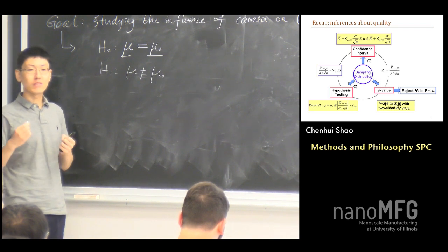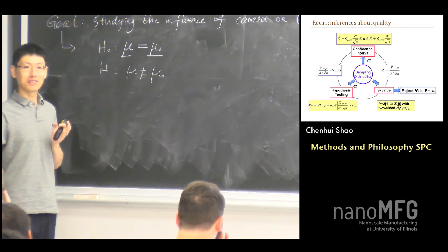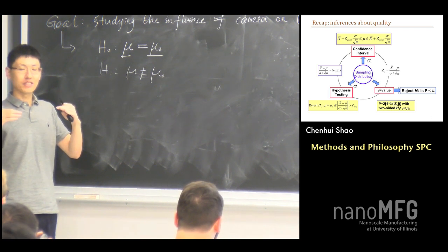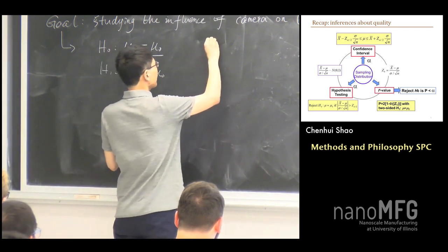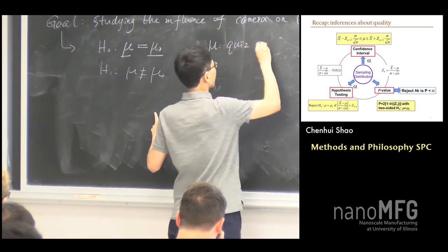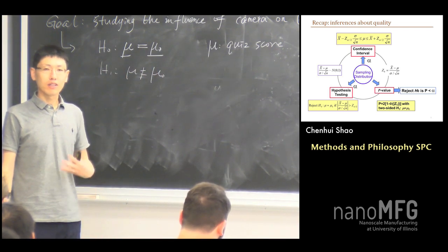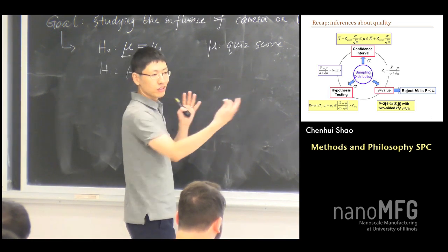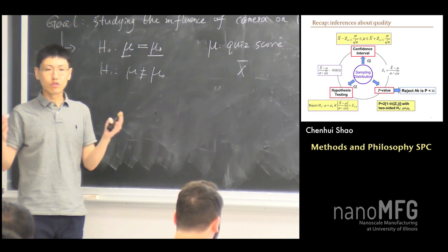Which setup can help achieve this goal? How about a quiz right after the course? So we test that after the course. That makes more sense, because we're testing the influence of the camera right after the camera is placed there. So, let's collect data. The mu-zero is quiz score after the class. And then how do we collect data? Of course, we need a quiz, and we do the quiz for all of you in our class and collect a bunch of scores.